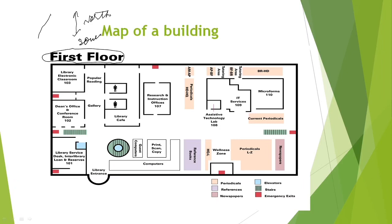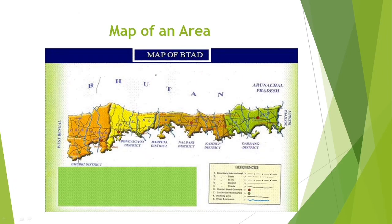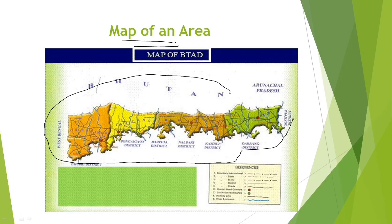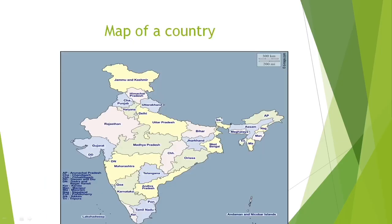The directions on a map are: east, west, north, and south. For example, on a school map you can find the library, the dean's office, the principal's office to the south, and the library service.